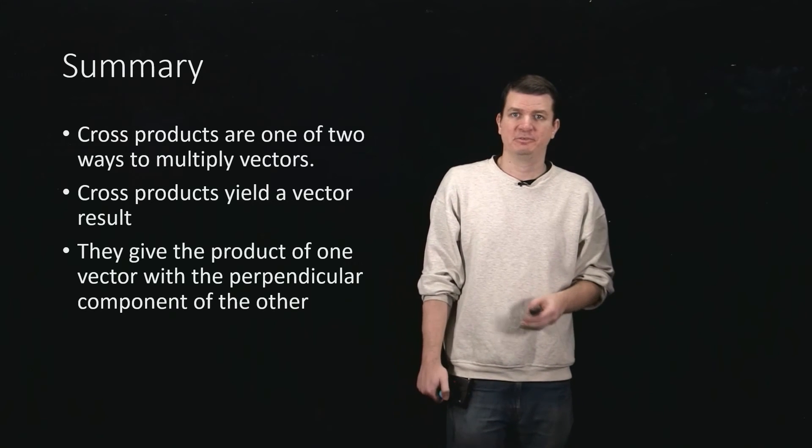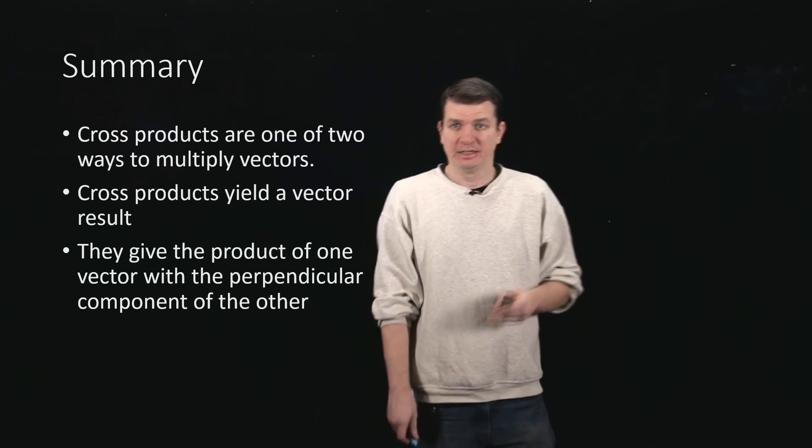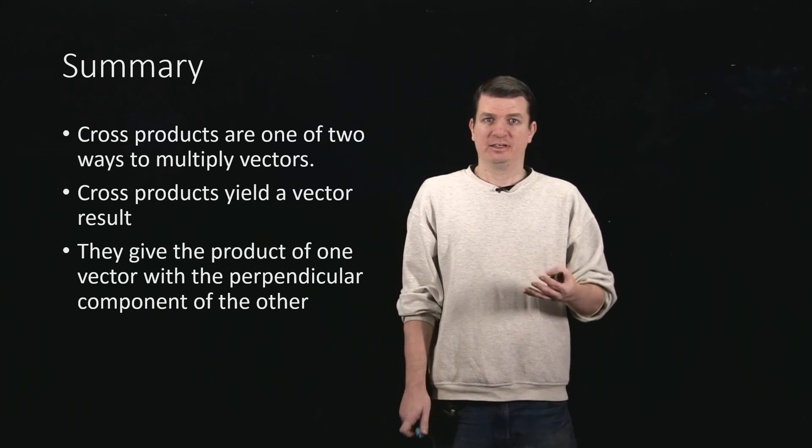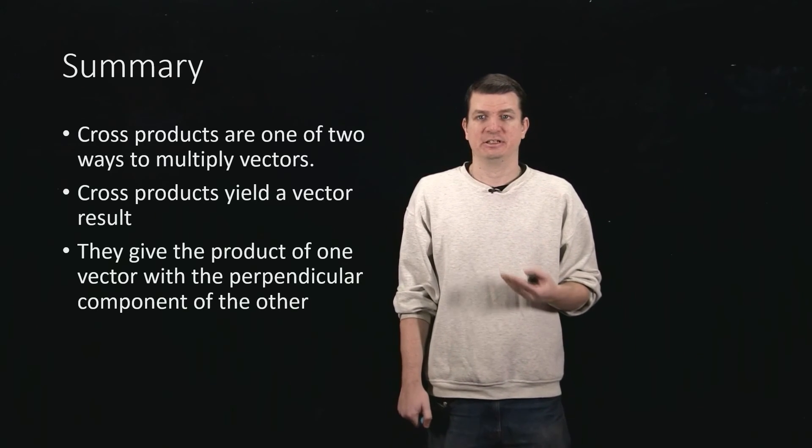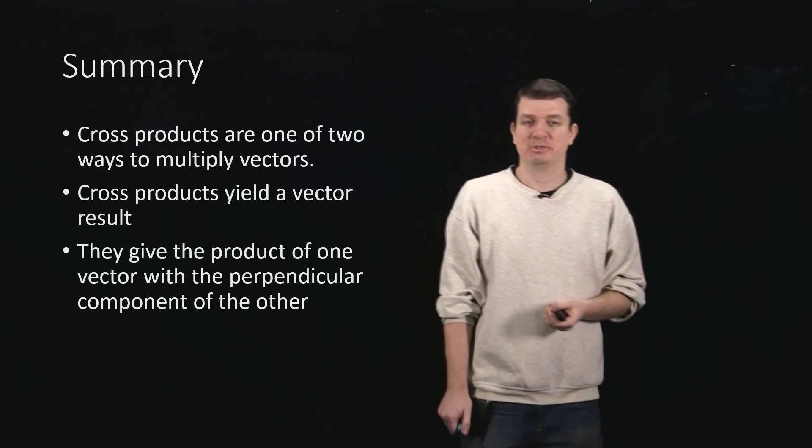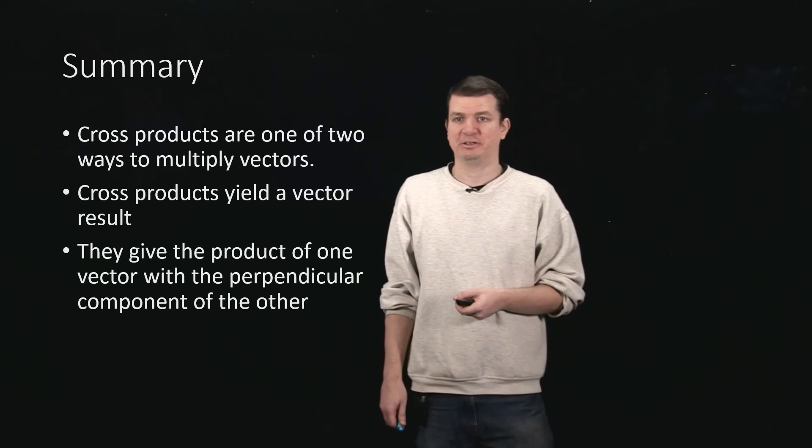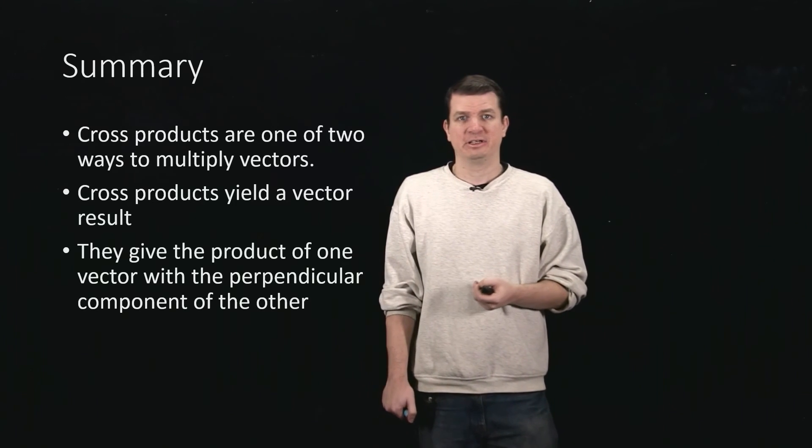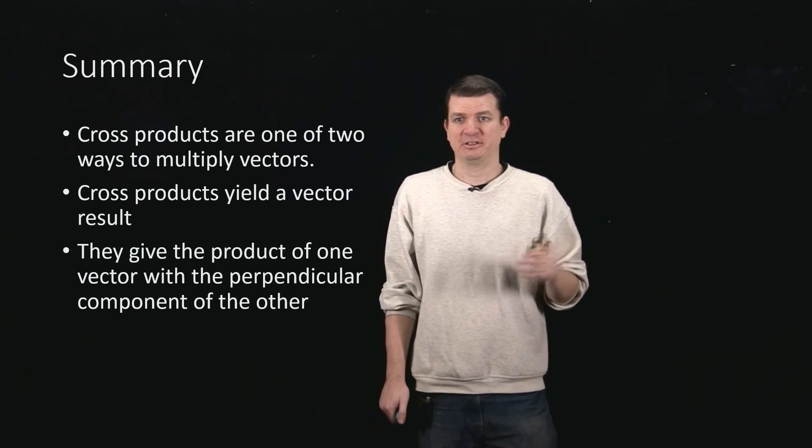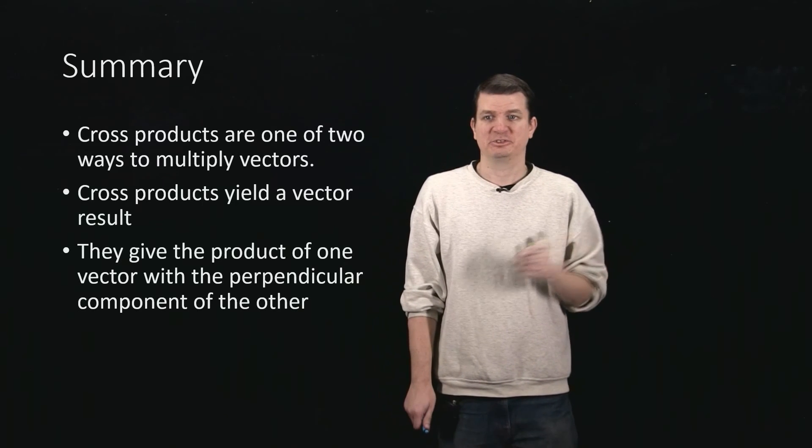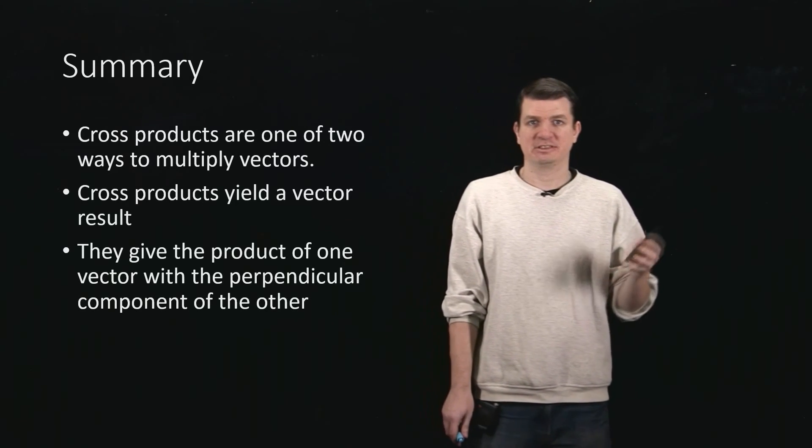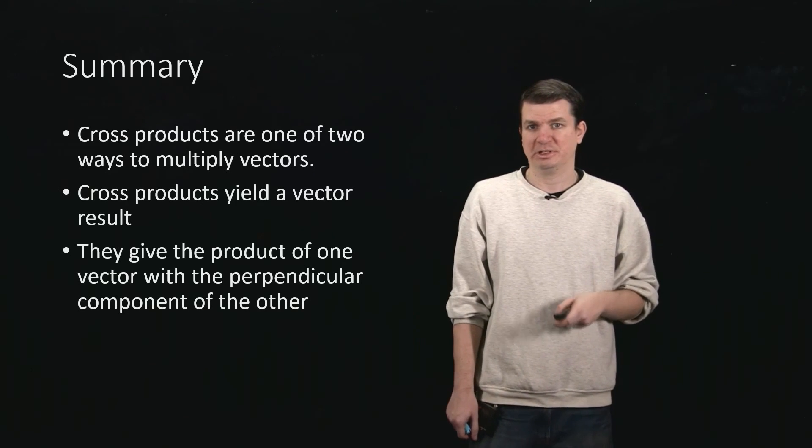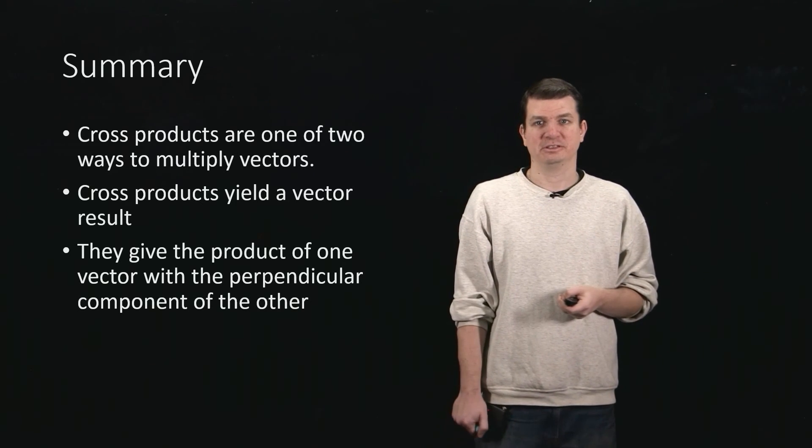Alright, so in this video we've seen quite a lot about the cross product. It was one of the two ways in which to multiply vectors, and this is the one that actually gives us a vector as a result. So that's coming with a direction given by the right-hand rule. And what the magnitude is really talking about is it's taking the perpendicular part of one vector multiplied by the magnitude of the other. It's giving us some sense of how it's the anti-projection, if you will, of the one vector onto the other.